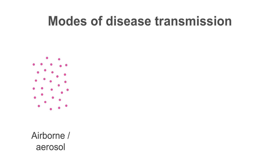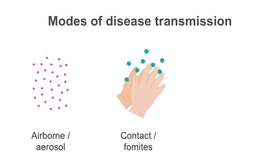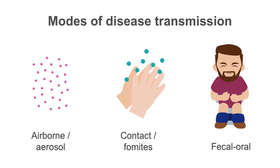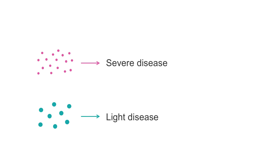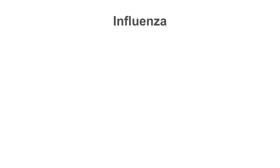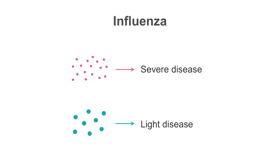We need to understand how airborne transmission really occurs. Different diseases have different modes of transmission: there's airborne transmission via small particles, transmission via contact or fomites, fecal-oral transmission, and many more. One disease can have multiple modes of transmission. Bacterial and viral infections that have more than one mode of transmission are called anisotropic. Disease severity can differ for a given disease depending upon the mode of transmission. Influenza transmitted by aerosols is generally thought to be associated with more severe illness than influenza transmitted via contact or fomites.